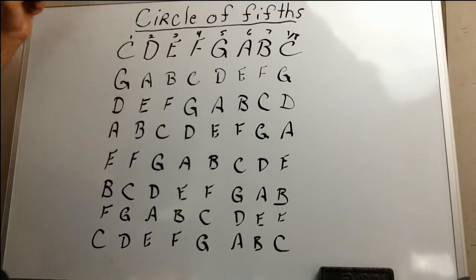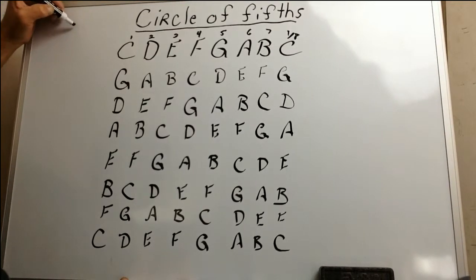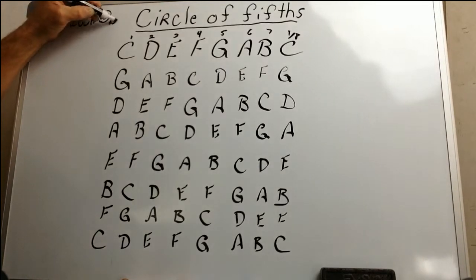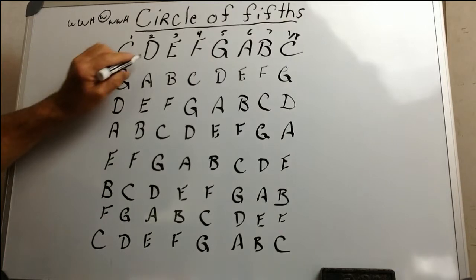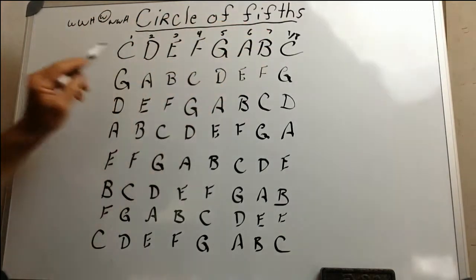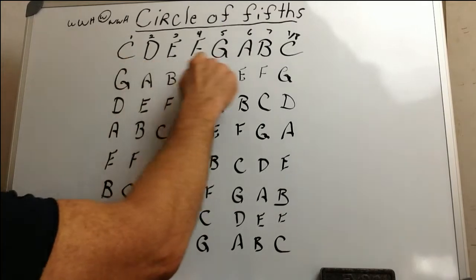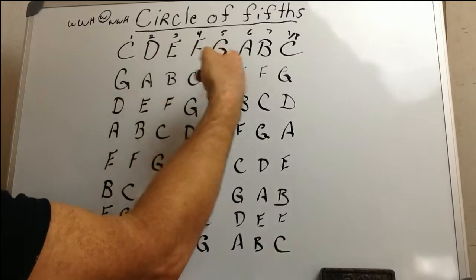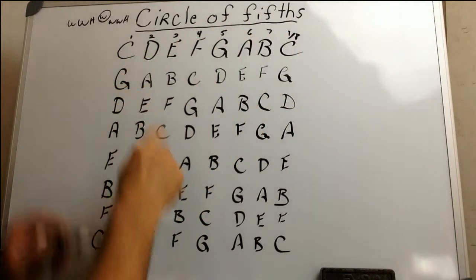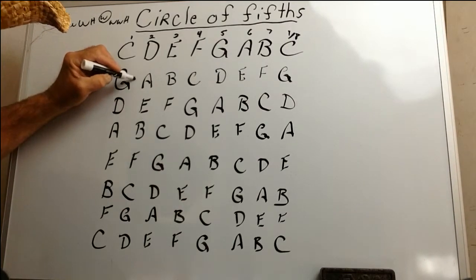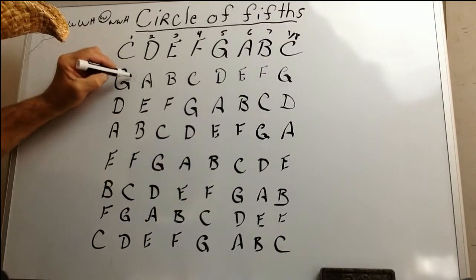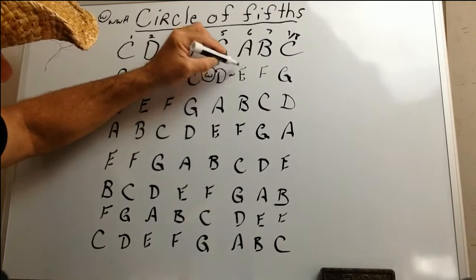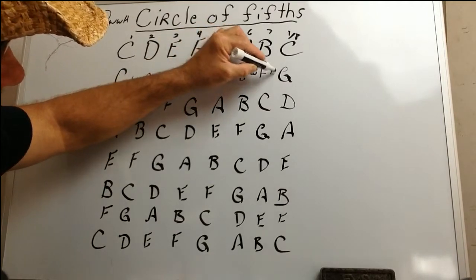Now we apply the major scale formula. If you remember, our major scale was whole step, whole step, half step, whole step, whole step, whole step, half step. We know from the major scale video that C has no sharps and no flats, so everything complies with C. So we go down to G and want to apply that same formula: whole step, whole step, half step, whole step, whole step, whole step, half step.